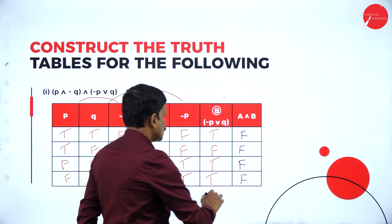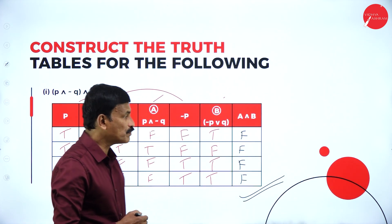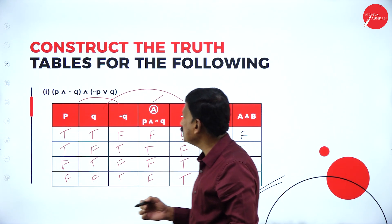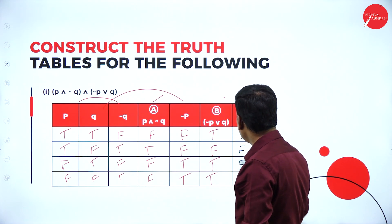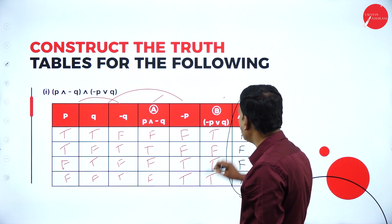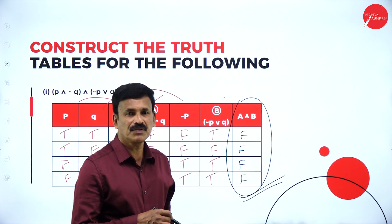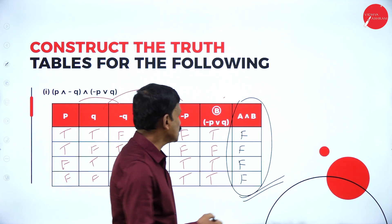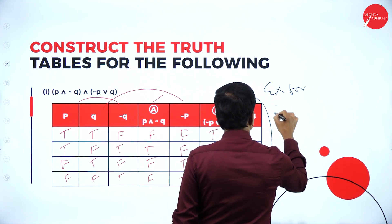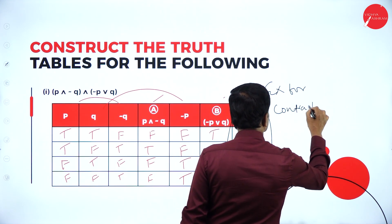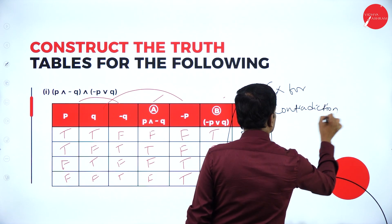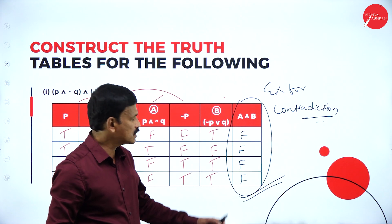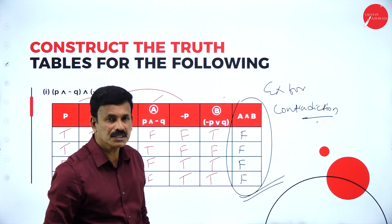This is the truth table for the given proposition P conjunction negation Q, conjunction negation P disjunction Q. If you observe carefully, all the truth values in the last column are found to be F, F, F, F. So this is an example for contradiction. If you get all truth values as T, T, T, T, then it is tautology; since it is F, F, F, F, this is called a contradiction.